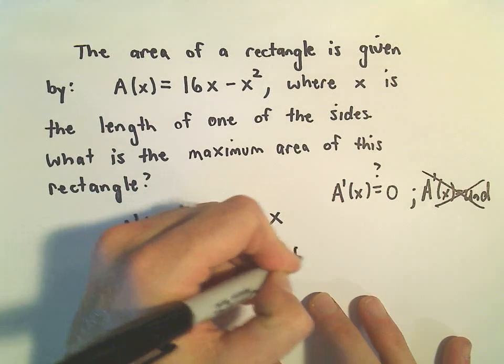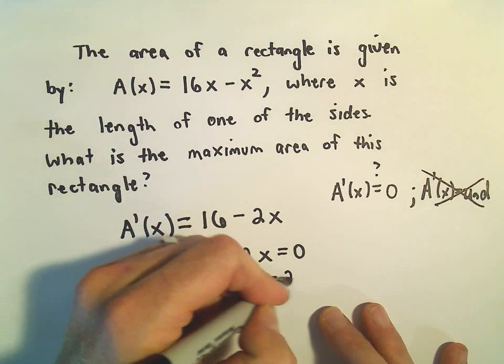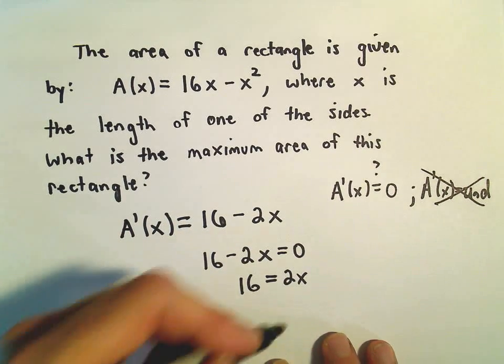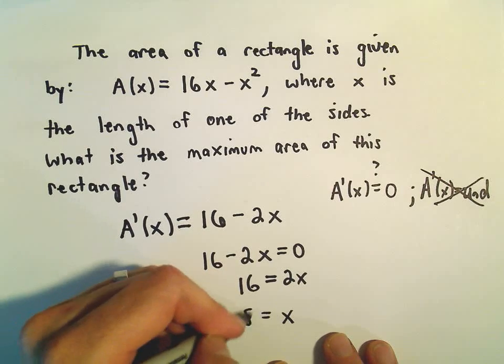So 16 - 2x = 0. Well, we can add the 2x to both sides. Divide both sides by 2. That'll give us x = 8.